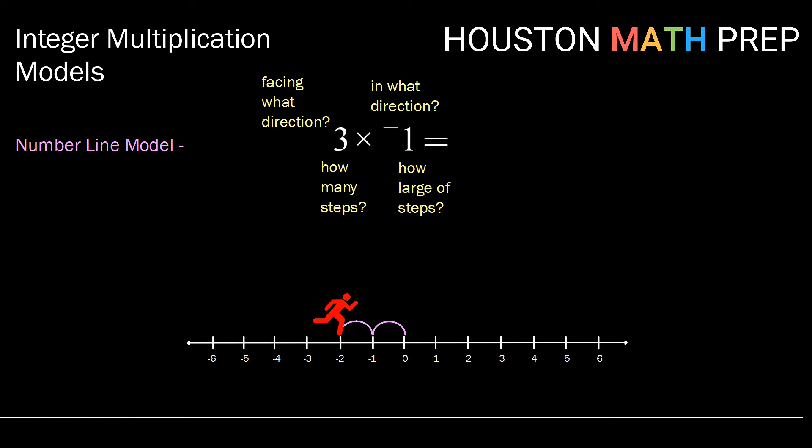Here's 1, 2, 3 backward steps. To get our answer, we look at where we ended up on our number line. By performing what we just did, we ended up at negative 3. So 3 times negative 1 is negative 3.